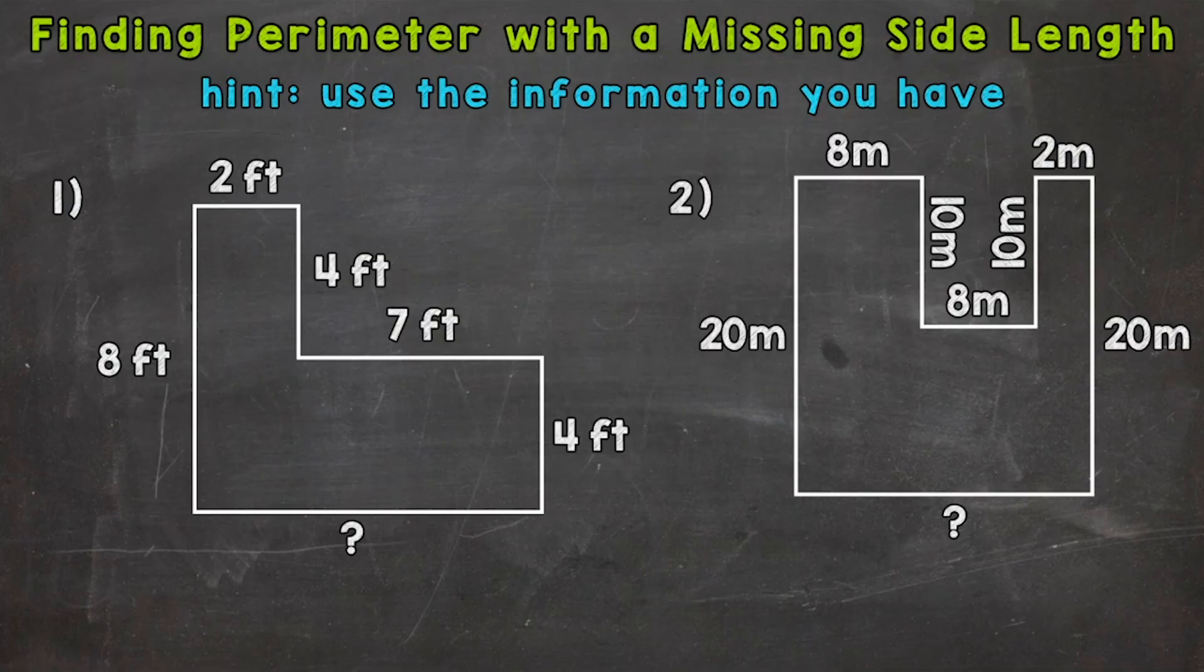And remember, perimeter is the distance around a two-dimensional figure. Two-dimensional meaning flat. So when we calculate perimeter, we need to add up all the sides.